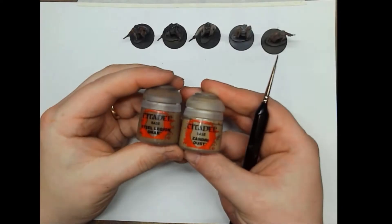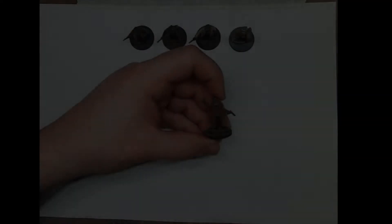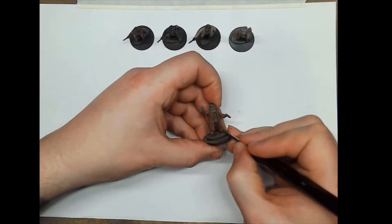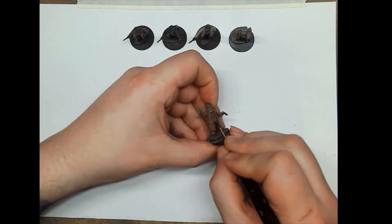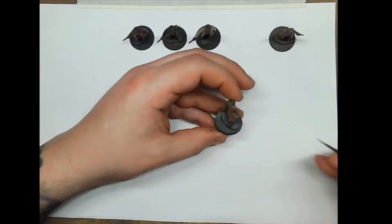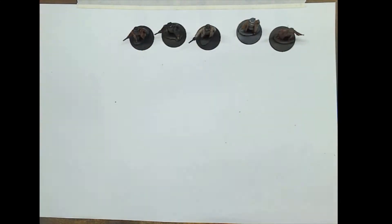Next up we're going to be highlighting the Steel Legion Drab with the Zandri Dust. Zandri Dust wasn't in the original listing, but this is one of the extra paints we're going to use and it's the natural highlight for Steel Legion Drab.